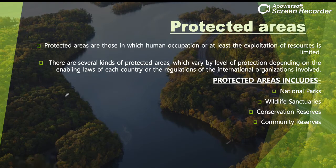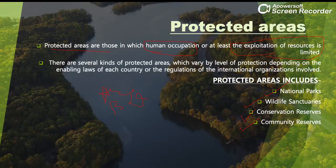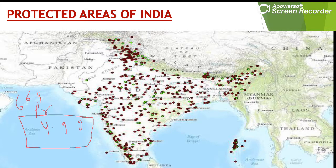What are protected areas? Protected areas are those areas where human occupation and resource use can be limited so that the area's biodiversity can be preserved. India has a protected area network which includes national parks, wildlife sanctuaries, conservation reserves and community reserves. India now has 669 protected areas, constituting 4.92% of the geographical area of the country.